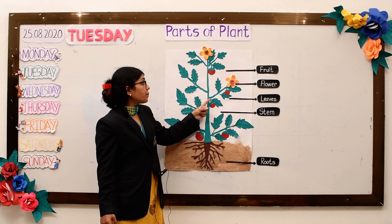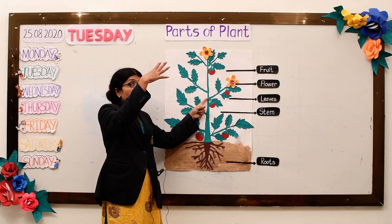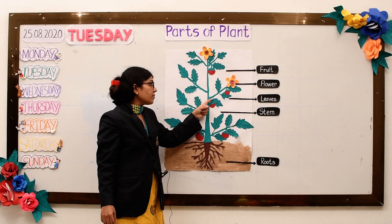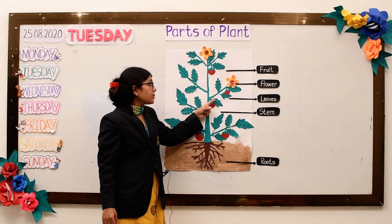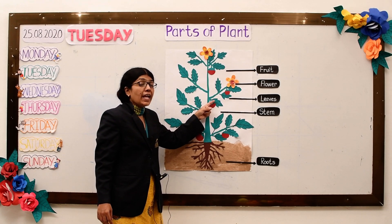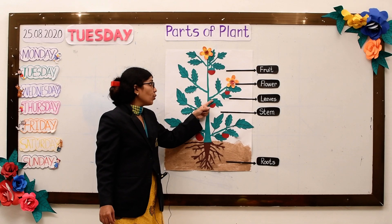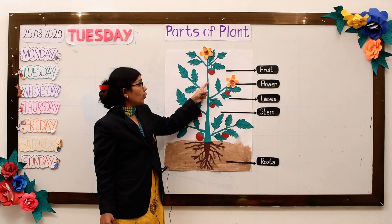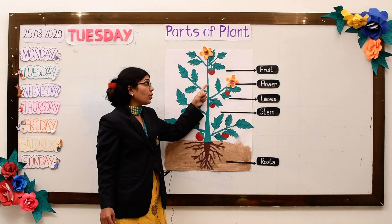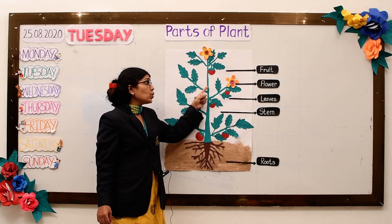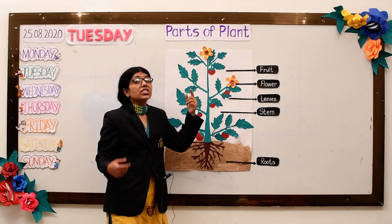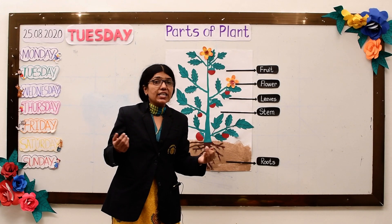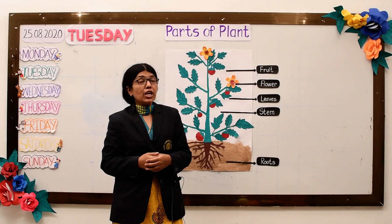The leaves soak up the rays of sun, the rays of sun. The leaves soak up the rays of sun and help them make the food. The flower that grows into a fruit — the flower grows into a fruit which takes the tiny seeds.